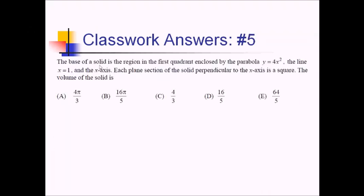For this problem, we're told the base of a solid is the region in the first quadrant enclosed by this parabola, the line x equals 1, and the x-axis — kind of a triangular-ish shape. The plane sections of the solid perpendicular to the x-axis are squares. We want the volume. Let's start by getting the area of the cross-sections, then integrate across the interval.